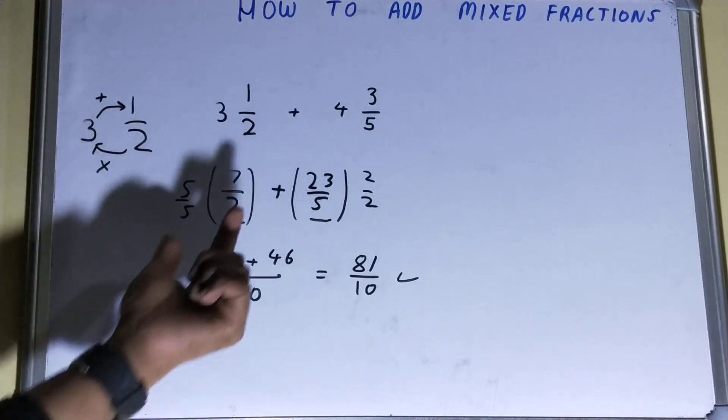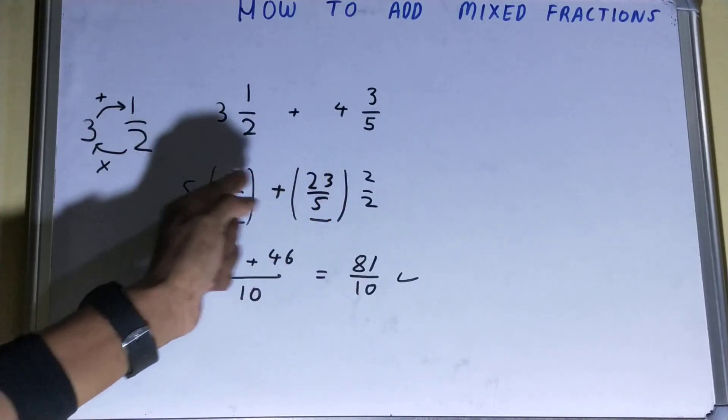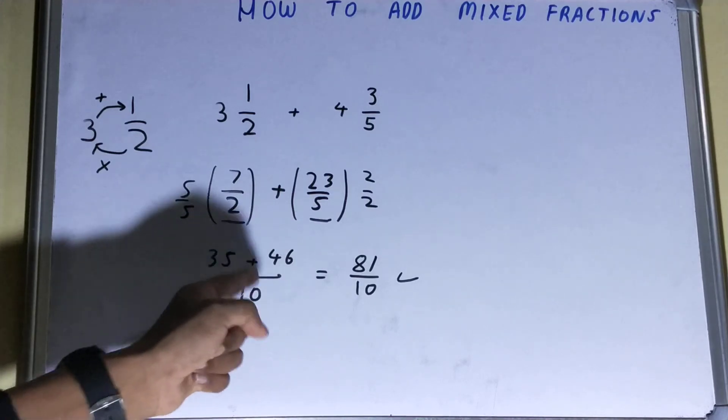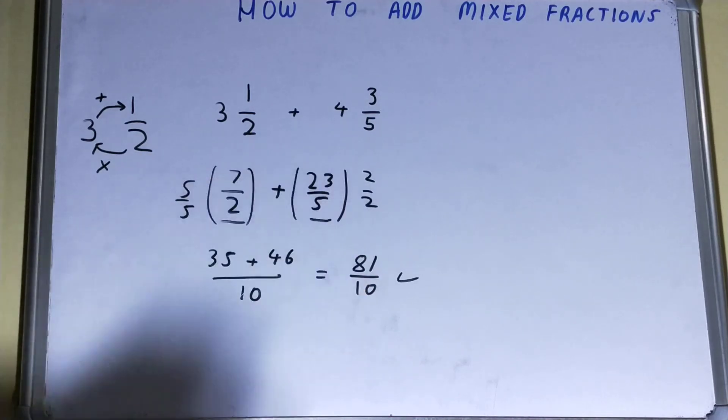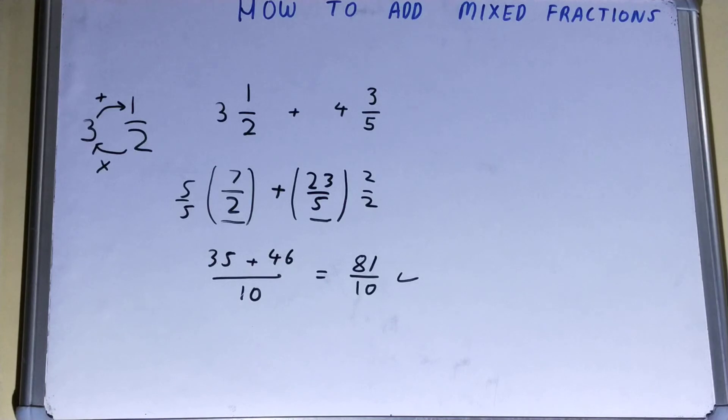That is, you should have equal denominators, then you can add the above one. So once we have the equal denominator, we can add the above values to obtain the answer. So this is how we can do.